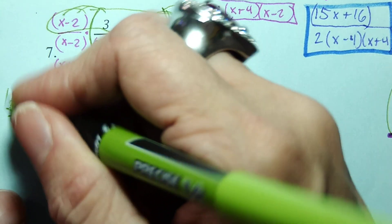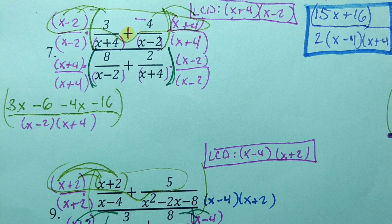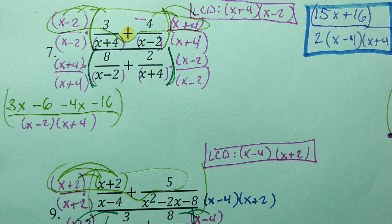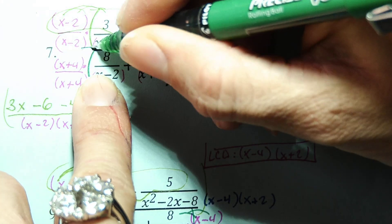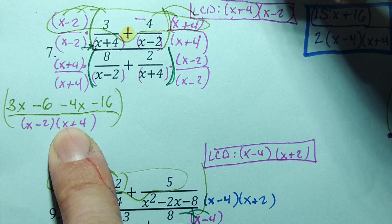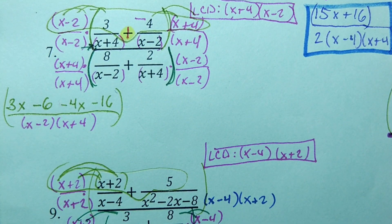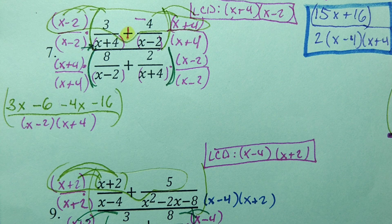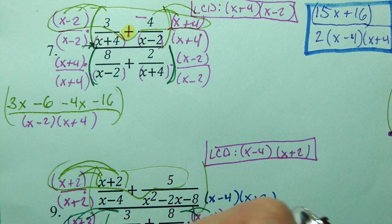So when I slid these together, the order doesn't matter. So x minus 2, x plus 4, you could just as easily have x plus 4, x minus 2. Order doesn't matter. 2 times 4 is the same as 4 times 2, so it doesn't matter the order that you put them in. So go ahead and try distributing on the bottom while also adding those tops together.